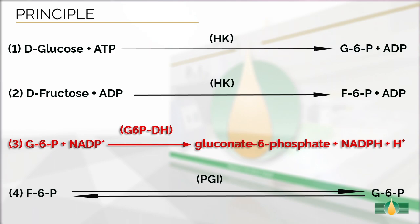The amount of NADPH formed in this reaction is stoichiometric with the amount of D-Glucose. It is the NADPH which is measured by the increase in absorbance at 340 nm. On completion of the glucose measurement, fructose 6-phosphate is converted to glucose 6-phosphate by the addition of phosphoglucose isomerase. The glucose 6-phosphate formed reacts in turn with NADP+, forming gluconate 6-phosphate and NADPH, leading to a further rise in absorbance that is stoichiometric with the amount of D-Fructose.